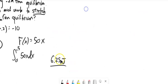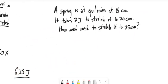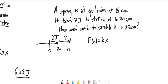Another example: A spring is at equilibrium at 15 centimeters. It takes 2 joules to stretch it to 20 cm. Notice 2 joules is work, not force. I still don't know the constant but can get there. Since work is the integral of force, I know that 2 = ∫₀⁵ kx dx, from equilibrium (0) to 5 cm of stretch.